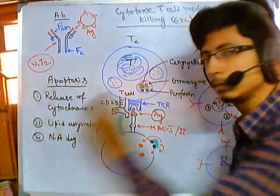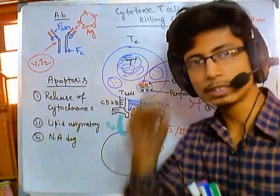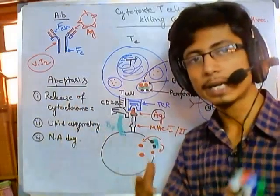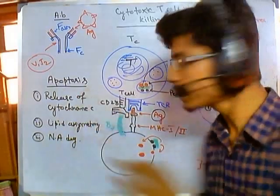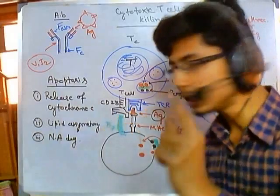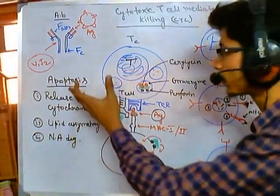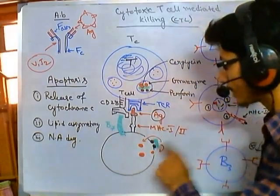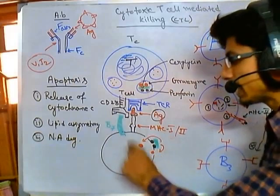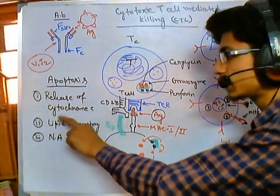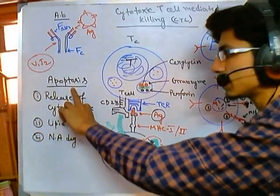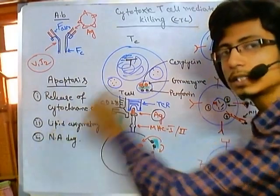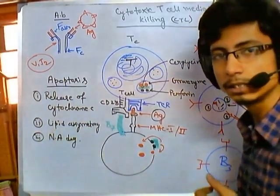The T-cell mediates and upregulates this apoptosis by secreting these enzymes. As the enzymes enter, they will change the lipid asymmetry, accelerate the release of cytochrome c from mitochondria, and help degrade the nucleic acid or DNA sequences.